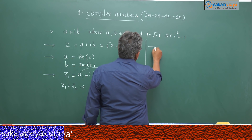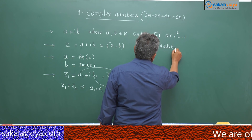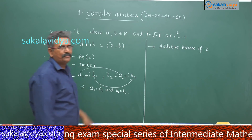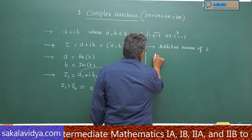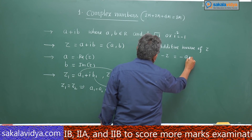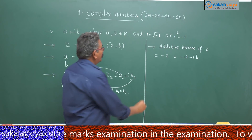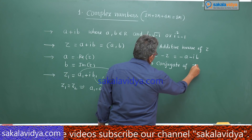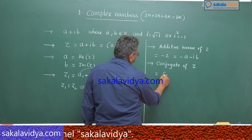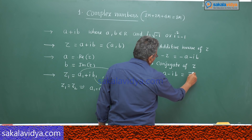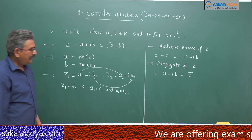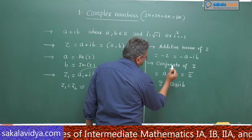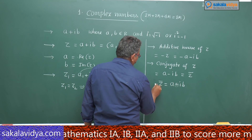What is additive inverse? The additive inverse of z — where z = a + ib — is minus z, which can be written as −a − ib. Now, what is the conjugate of z? The conjugate of z is a − ib, denoted by z-bar. If z = a + ib, then its conjugate z-bar is written by replacing the plus with minus.